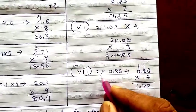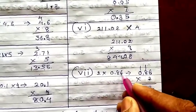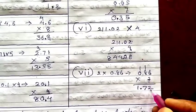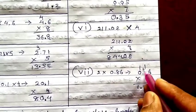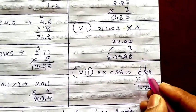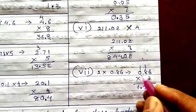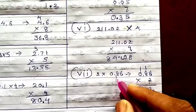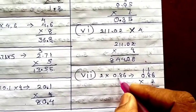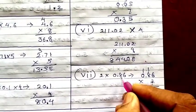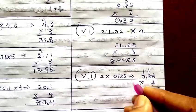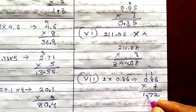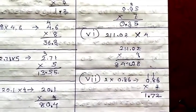Then 2 into 0.86. So 0.86 into 2. 2 sixes are 12, carry 1. 2 eights are 16, plus 1 is 17, carry 1. 2 zeros are 0, plus 1 is 1. In the question after the decimal there are 2 digits, so leave 2 digits from the last and place your decimal there.